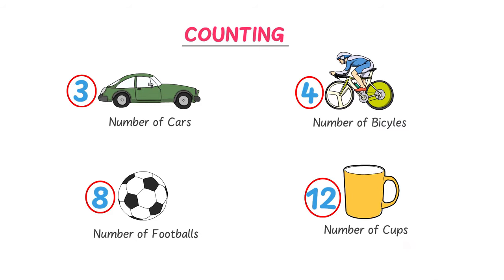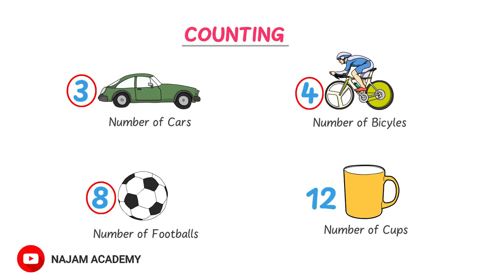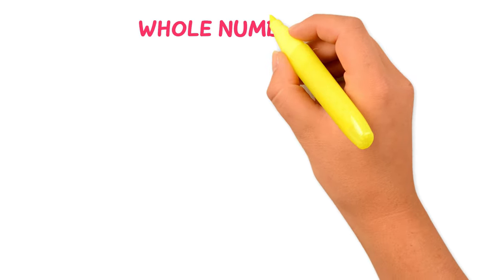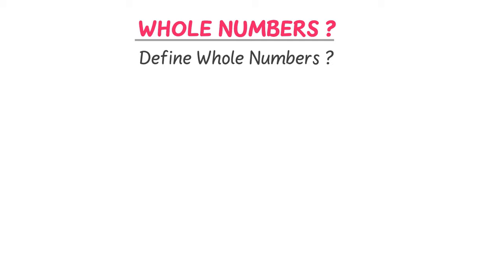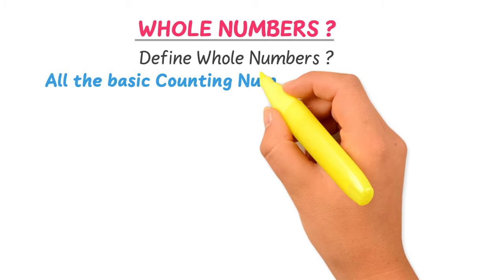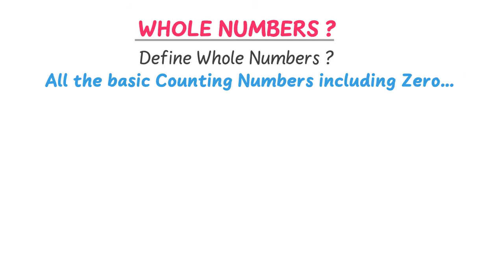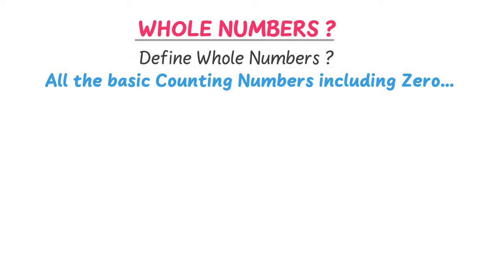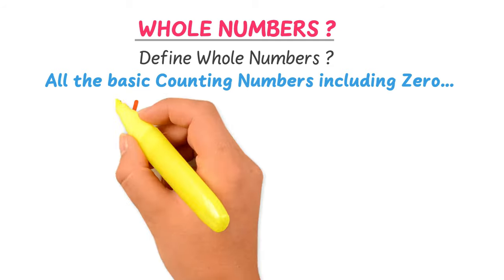These numbers are counting numbers — we use them for basic counting purposes. So 3, 4, 8, and 12 are basic counting numbers. All the basic counting numbers including 0 are called whole numbers. The set of whole numbers is denoted by W.